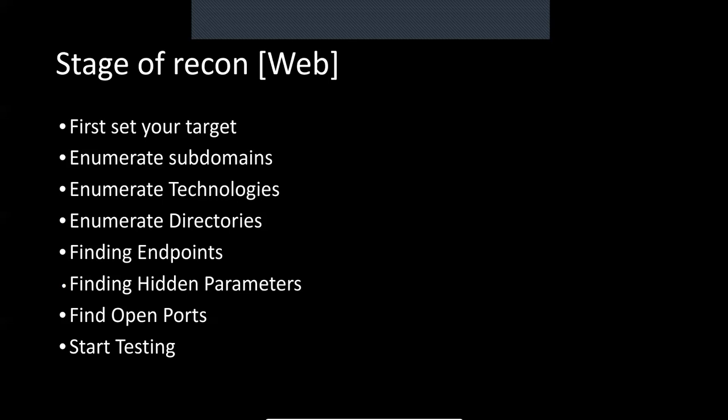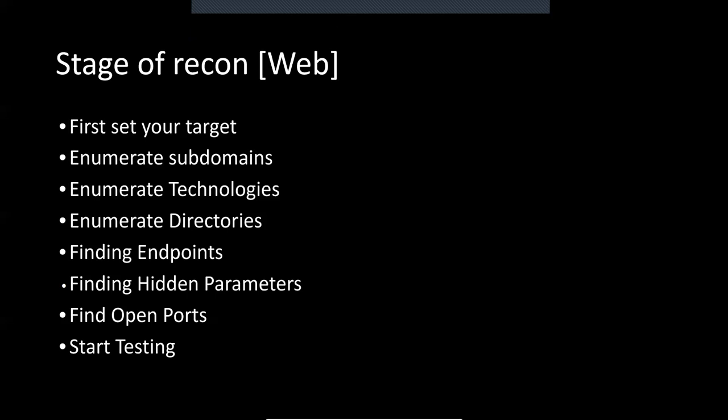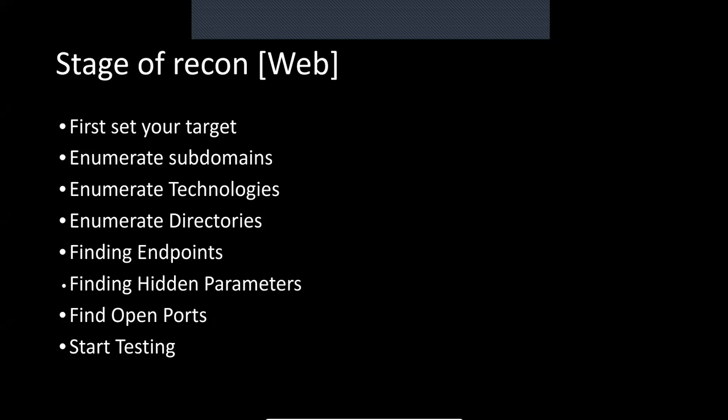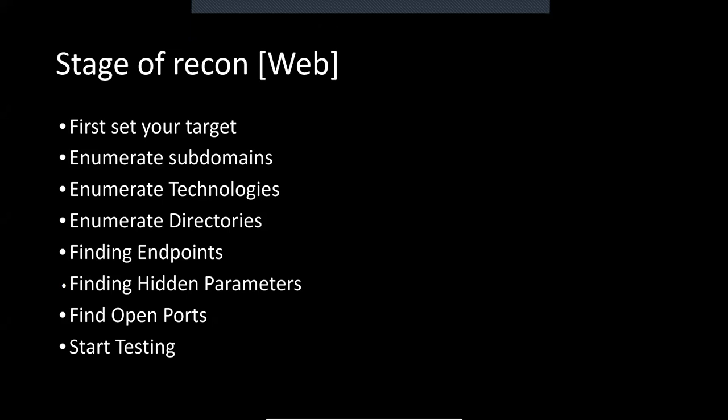After enumeration, find hidden directories for that subdomain you are going to target. Then find endpoints — in JavaScript files there are many endpoints available. Find those endpoints, target them using hidden parameters, and then exploit. After finding hidden parameters, find open ports and start testing.